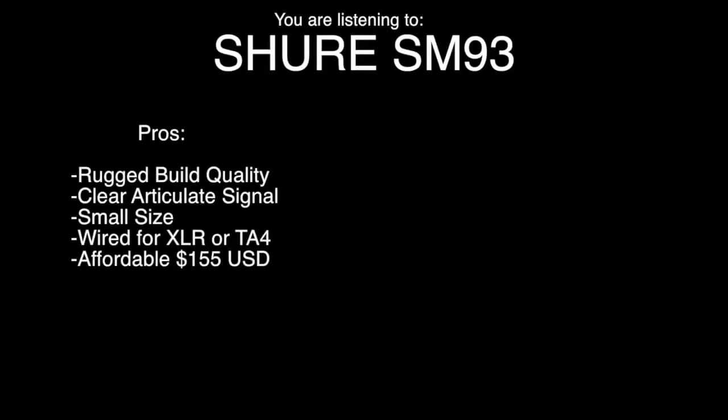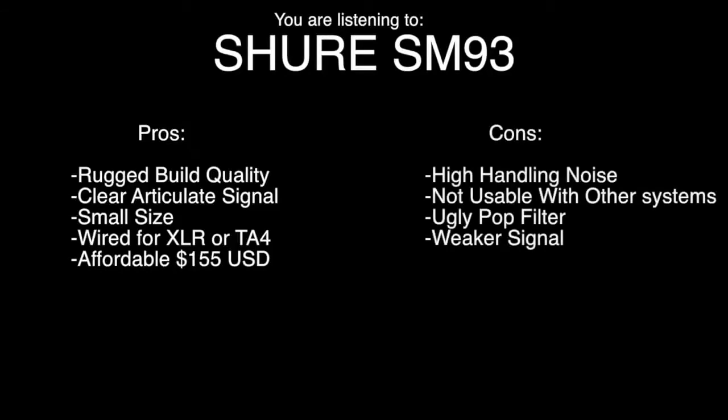So here's how it breaks down for me. As far as the Shure SM93, the pros are the rugged build quality. This thing's going to last you forever. The clear, articulate signal. I actually prefer this mic out of the two for my voice. It's a nice small size. It can be hidden. It's wired for XLR or for TA4 wireless. And it's affordable at $155 US dollars. As far as the cons go, it does have a pretty high handling noise. It's not usable with any other wireless systems. It has that ugly pop filter. And it does have a little bit weaker signal than the Rode.